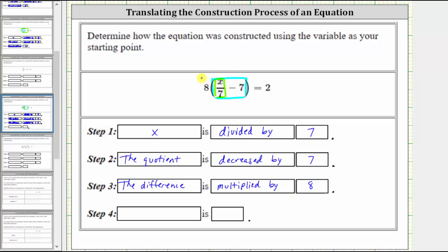Notice once we multiply this difference by 8, we have the entire left side of the equation, which we know is equal to positive 2, which means the final step, step 4, is the result.